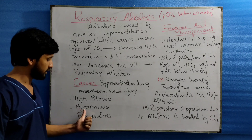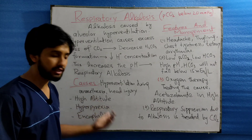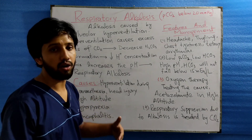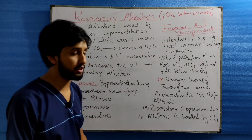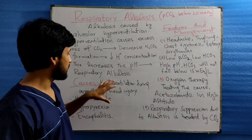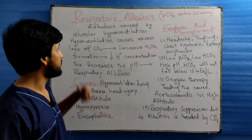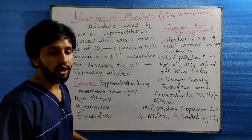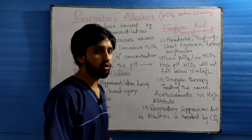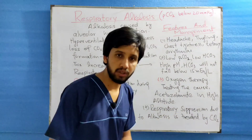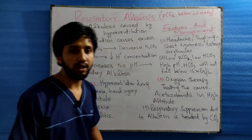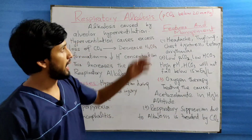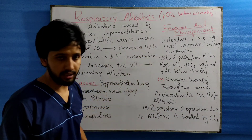The third cause is hyperpyrexia, encephalitis, or other liver diseases. These are all the causes of respiratory alkalosis. In respiratory alkalosis, the partial pressure of CO2 is usually less than 20 mmHg.